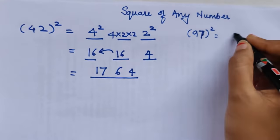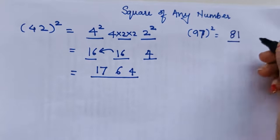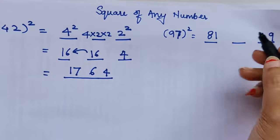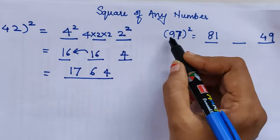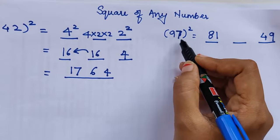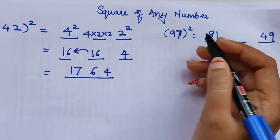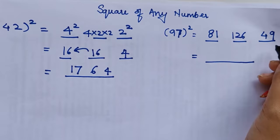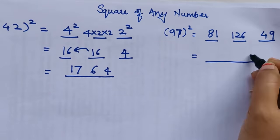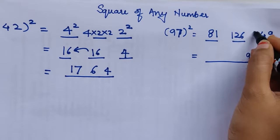For finding the square of 97, we first find the square of the first number, that is 81. This is my first part. For my last part, I will take the square of 7 which is 49. And for my middle part, I will multiply all these numbers. So 9×7=63, which is then multiplied by 2, gets us 126.